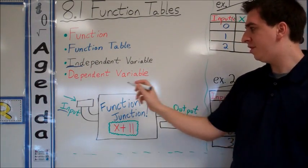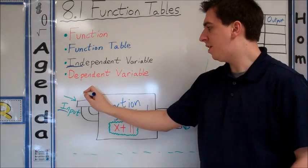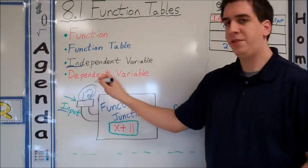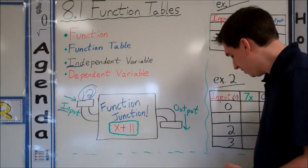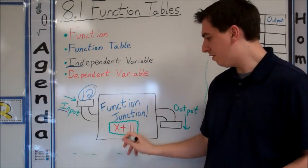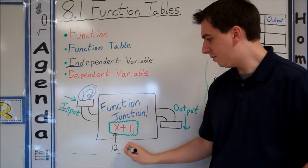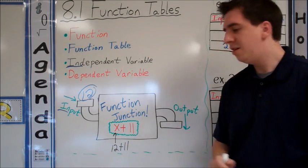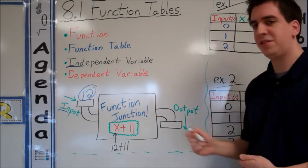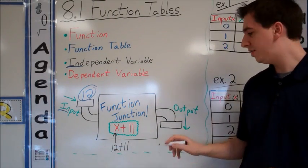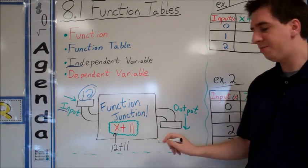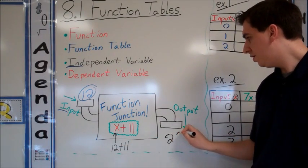Whatever we put in here, let's say I put in 12. 12 is going to go through this machine. It gets all changed around. It goes through the gears. And what happens to it? 12 becomes x. So 12 gets put here. We add 11 to it. 12 plus 11, we can do that. We know our order of operations. And this is just adding two numbers together. 12 plus 11 is 23.